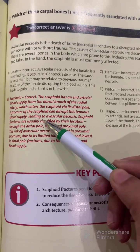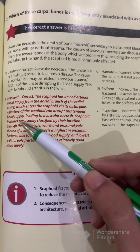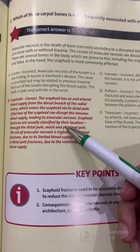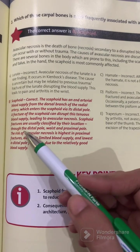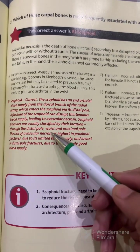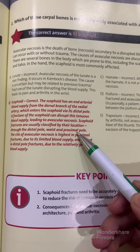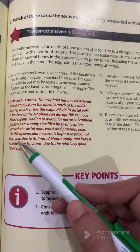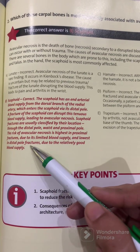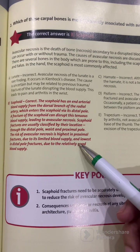Scaphoid fractures are usually classified by their location: through the distal pole, through the waist, and through the proximal pole. The risk of avascular necrosis is highest in proximal pole fractures due to the limited blood supply to that region.